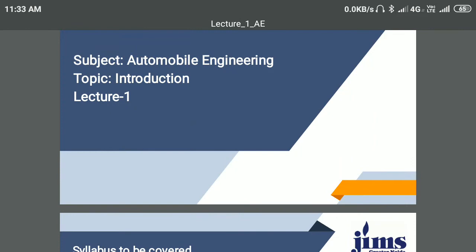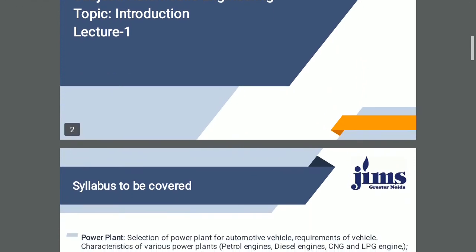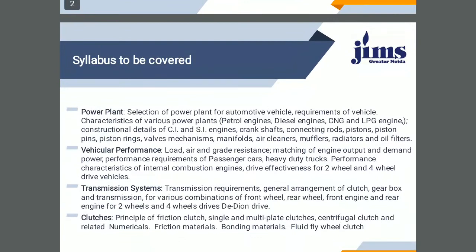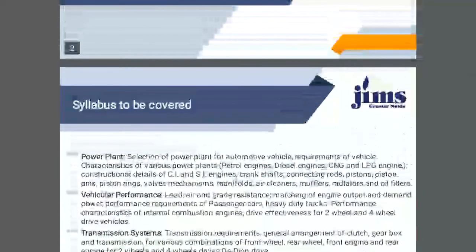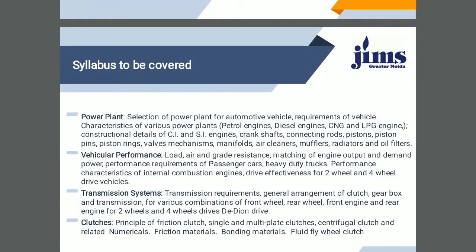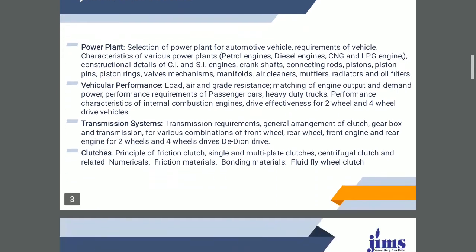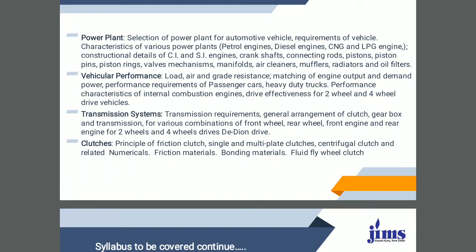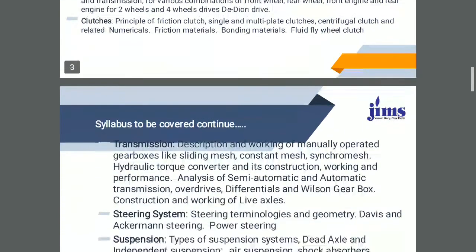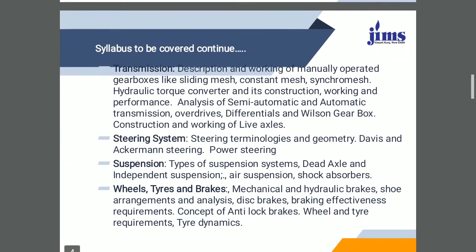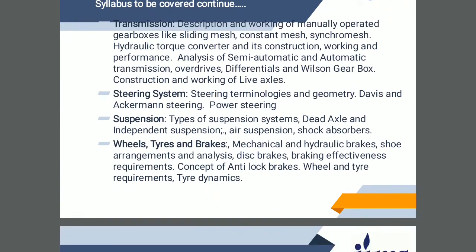First of all, here we have to cover the first topic in production. Before that we have to see what is the syllabus of Automobile Engineering. Let's see the power plant, in which we have to study the different types of engines. After that we have to study the performance of those particular engines. Then the transmission system — clutch, gearbox, etc. After that you have to study the steering, suspension system, tires and the brakes.